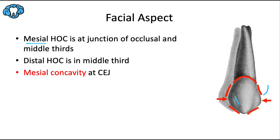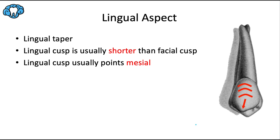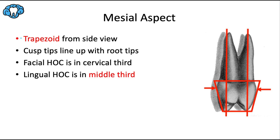There are two distinct developmental depressions with a dominant facial lobe, just like the maxillary canine. The lingual aspect is narrower than the facial aspect. Even though it has two distinct cusps, it still consists of only one lingual lobe versus three facial lobes, which is why the lingual cusp is smaller. The lingual cusp is classically about one millimeter shorter than the facial cusp and tends to point in a mesial direction.